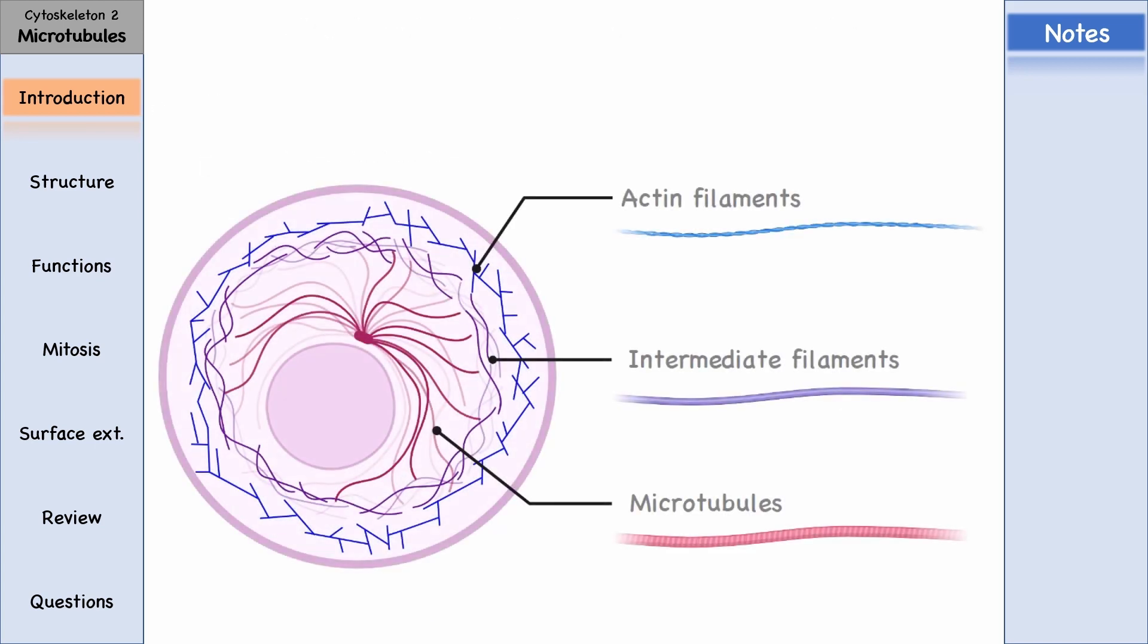Microtubules are the largest among the proteins that make up the cytoskeleton. The diameter of actin filaments is 7 nanometers, intermediate filaments are 8 to 10 nanometers, and the diameter of microtubules is 25 nanometers.